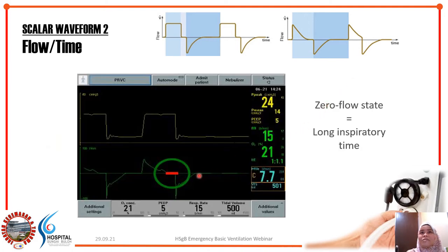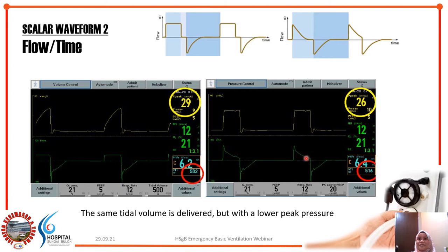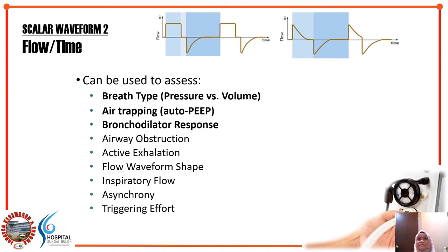If you notice an area of no flow — indicated by a flat line — this is known as a zero-flow state, indicating the I time is too long for this patient and you should reduce it. Also, a decelerating flow pattern may be preferred over the constant flow pattern because the same tidal volume is delivered but with a lower peak pressure.